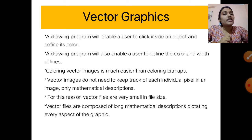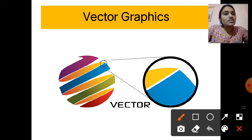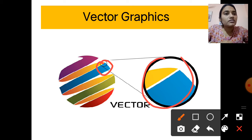Vector files are composed of long mathematical descriptions defining every aspect of the graphics. In the same picture previously shown as a raster image — where it looked like small squares when enlarged — in vector graphics it only shows two clean color regions. When we take that small portion and enlarge it, only two colors are there, clearly partitioned.